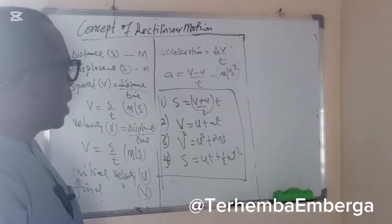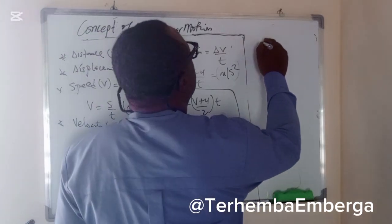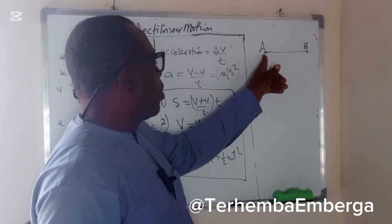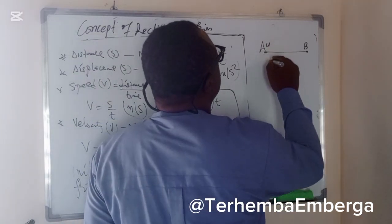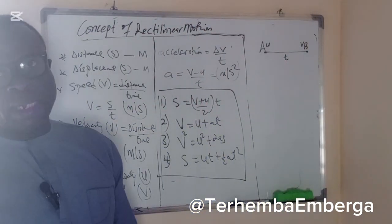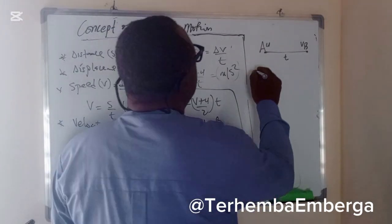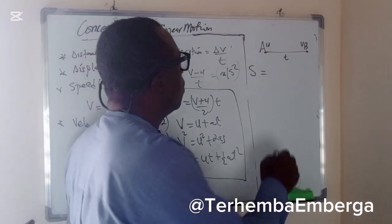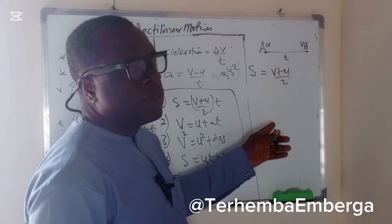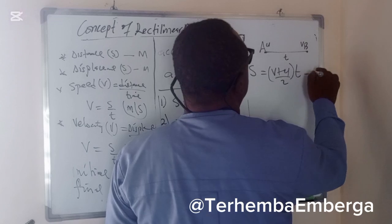Let's start with the first one. We're talking about motion on a straight line. If we have two points, point A and point B, and an object starts from point A with an initial velocity u, attains a final velocity v, and covers a time of t — if we want to know the total distance covered, we talk about the average velocity multiplied by time. Mathematically, s equals (v plus u) over 2 times t. We can call this equation one.